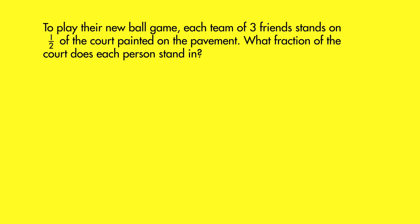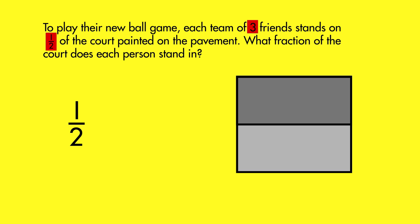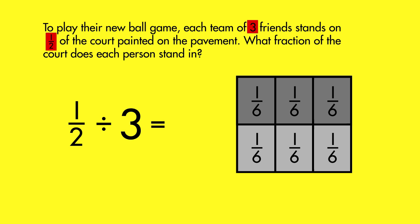Look at this word problem. The court is divided into halves. Each team of three friends stands on one-half of the court, so each half is divided into thirds. Each friend stands on one-sixth of the court. One-half divided by three equals one-sixth.